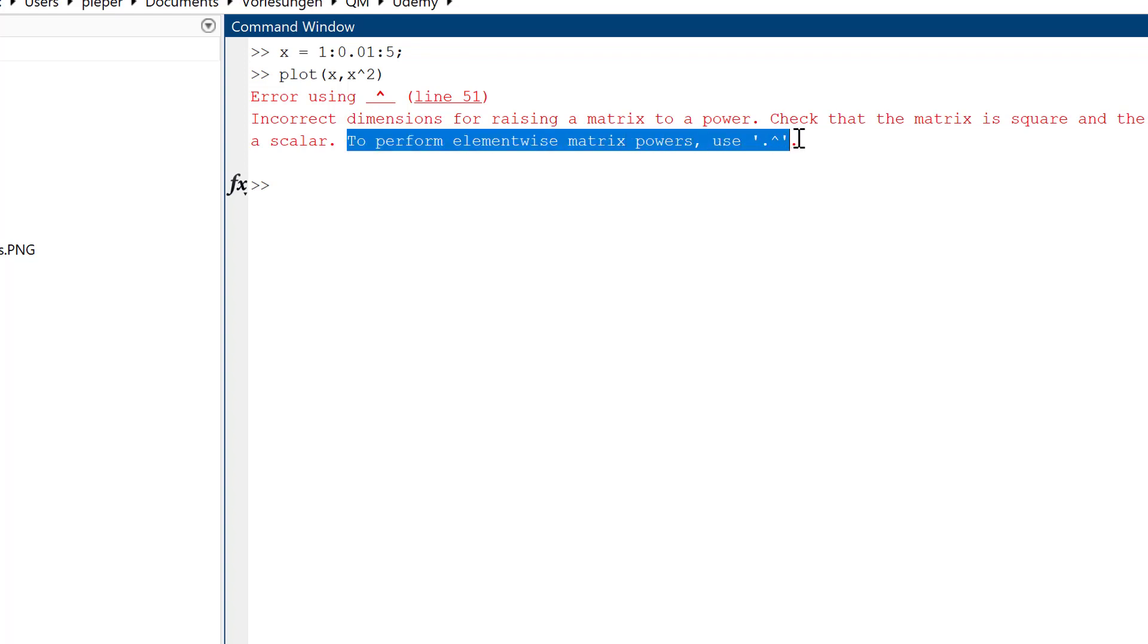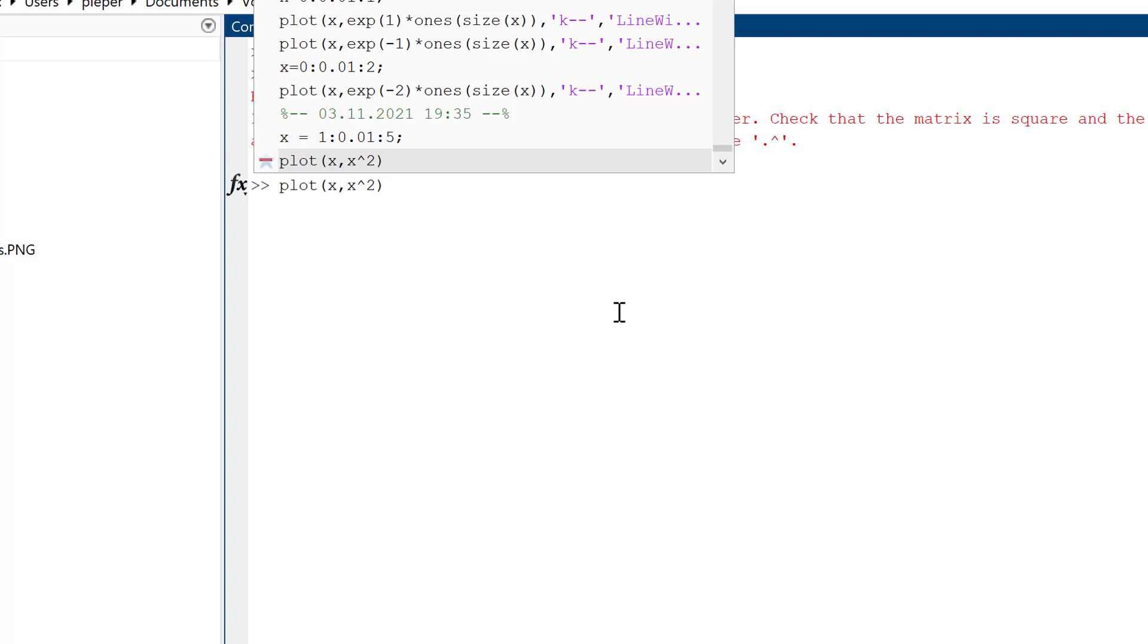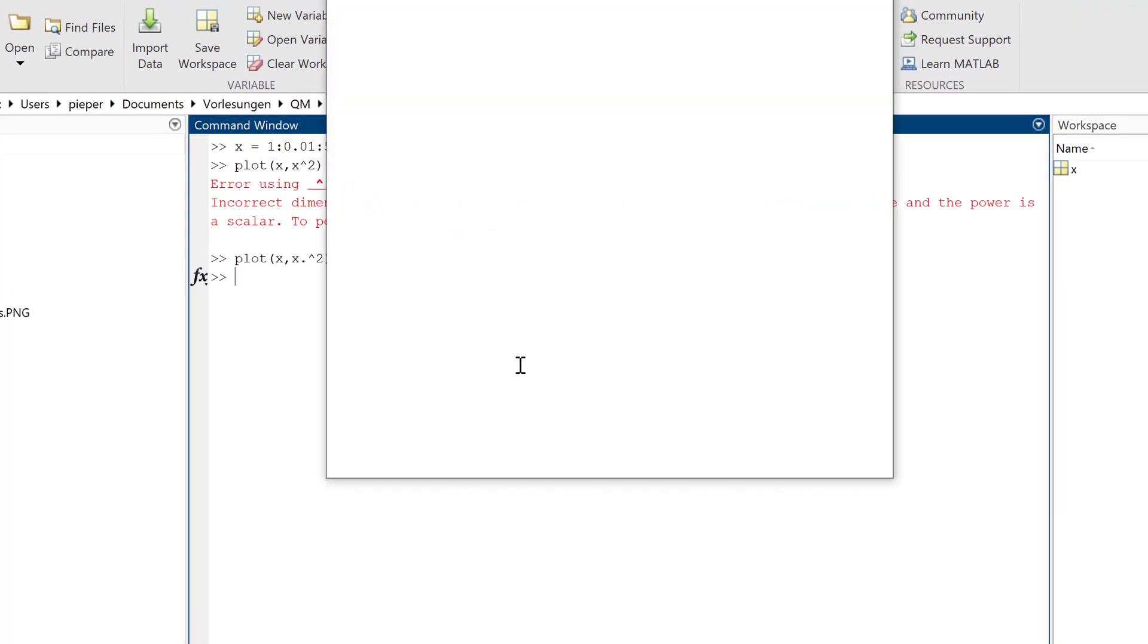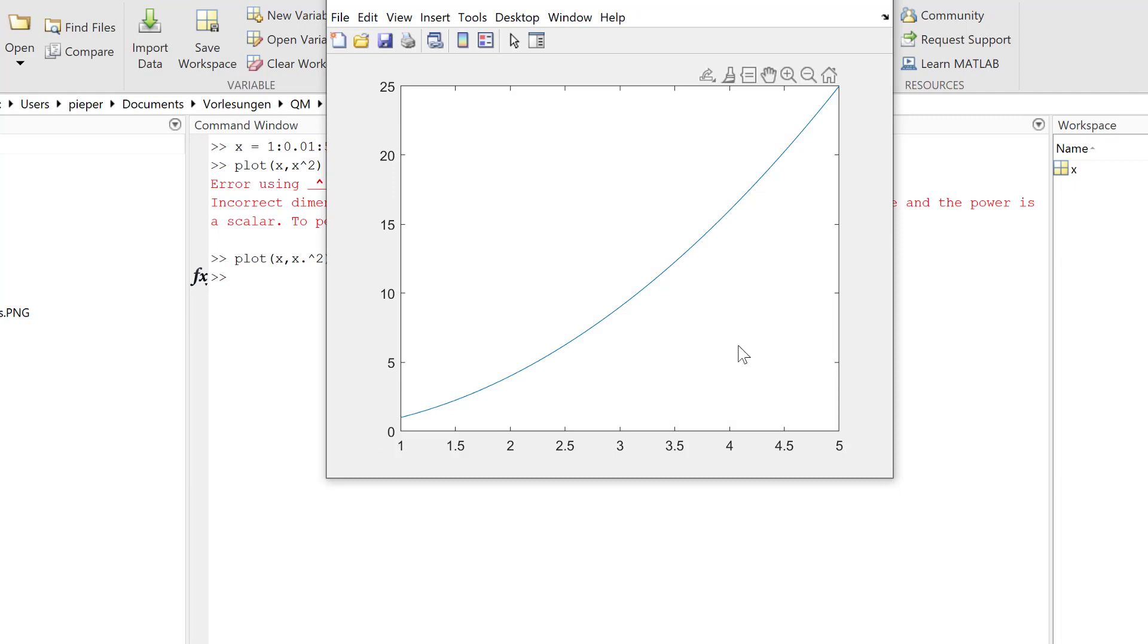First, insert the vector. Let's start at 1 with 0.01 step length and end at 5. Now we plot X comma X squared. I forgot the dot operator and you see we obtain an error message. MATLAB gives a hint that we should perform this element-wise. So I change this to dot squared, and then we obtain the plot - part of a parabola.